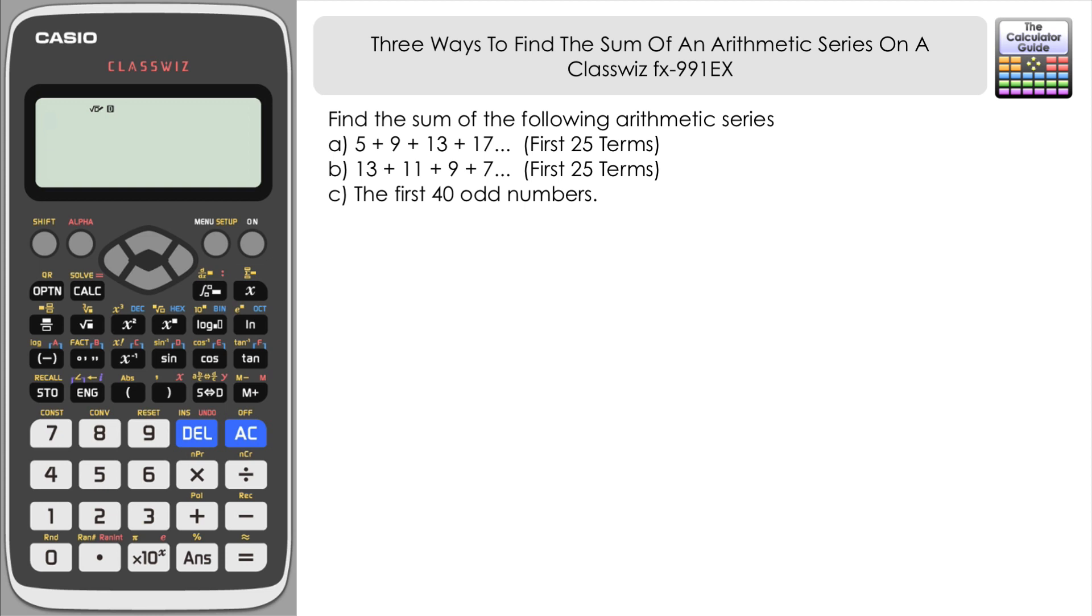Let's look at the first one. We need to find the sum of the first 25 terms of the series 5 + 9 + 13 + 17 and so on. In the first two series, we're going to use the sum feature on the Casio Classways with two variations of the equation of the nth term - the same equation used in two slightly different ways.